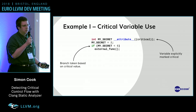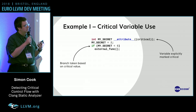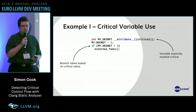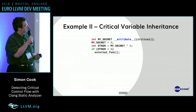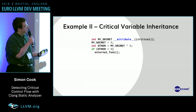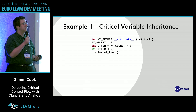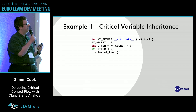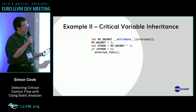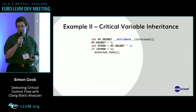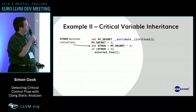We might be able to add a simple compiler warning for that, but we want to be able to do more detailed things. For example, if we have variables that themselves aren't annotated, but have their values derived from something that has this annotation, we also want to warn about this.